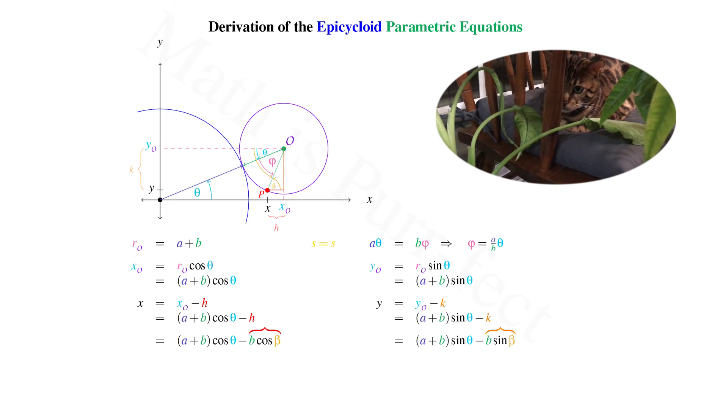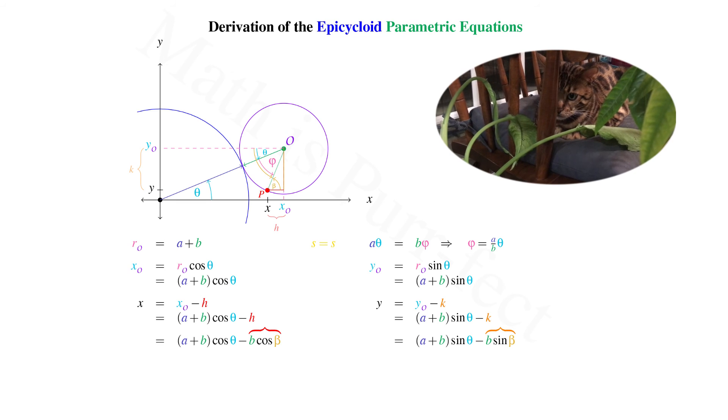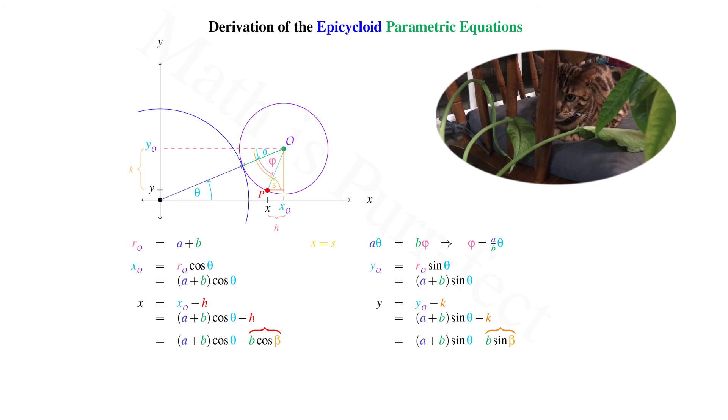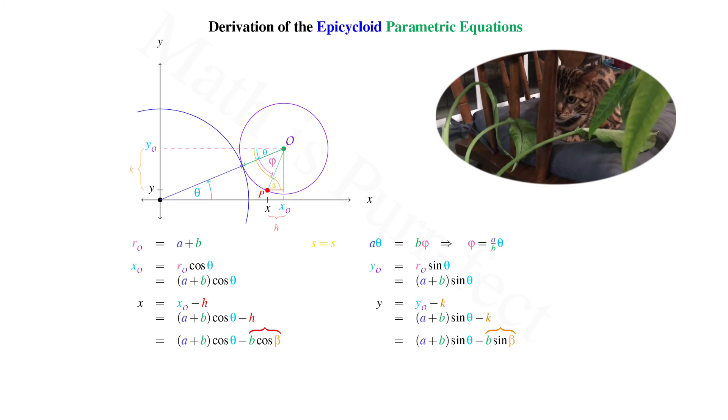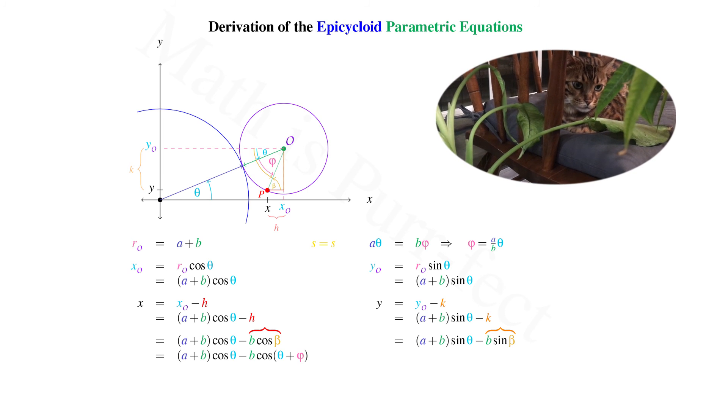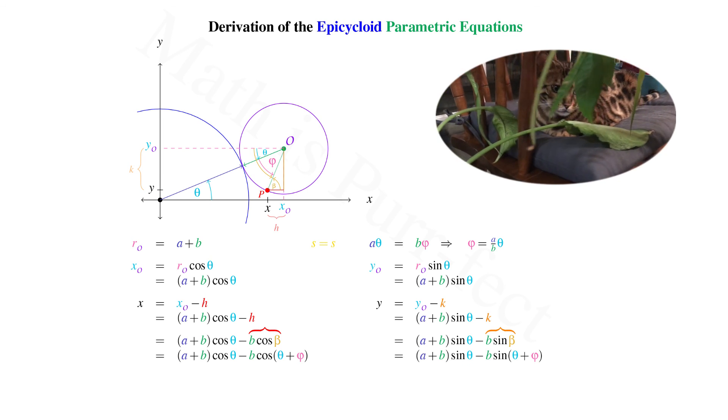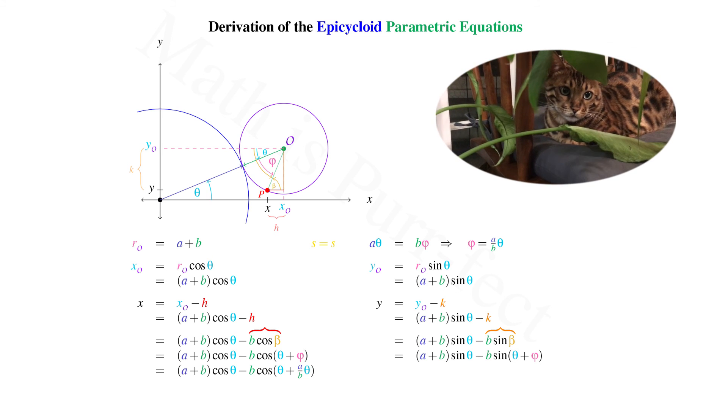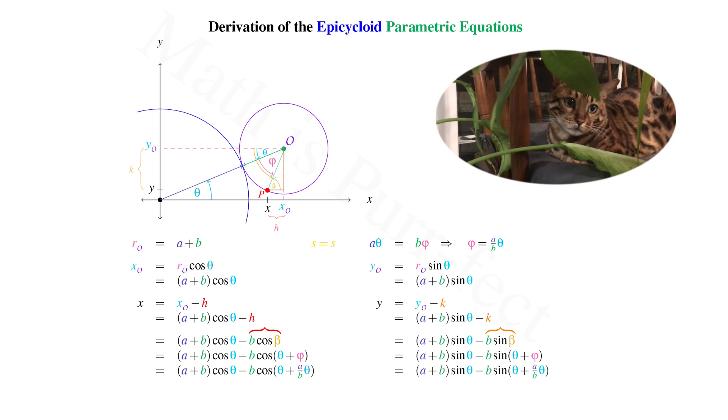And Y equals A plus B sine theta minus B sine beta, as K is opposite angle beta. We know that beta is equivalent to its alternate interior angle, that is theta plus phi. And we recall that phi can be written in terms of theta as A over B times theta.